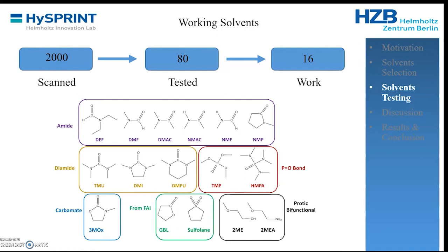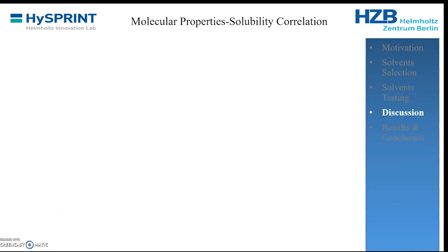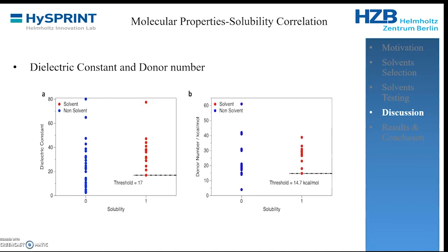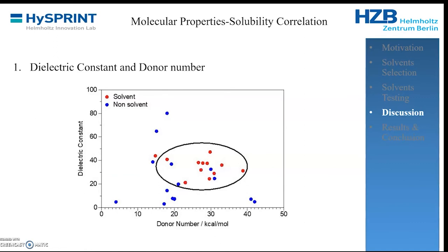We grouped the 16 working solvents into six main groups and analyzed what molecular properties enable them to solubilize formamidinium iodide and tin iodide. We used dielectric constant and donor number as descriptors, plotting each against solubility (1 if soluble, 0 if not). We found a threshold dielectric constant of approximately 17 — all dissolving solvents had a dielectric constant of 17 or above. Similarly, the donor number threshold was 14.7 kcal/mol. Plotting dielectric constant versus donor number defines a region where perovskite-dissolving solvents are found.